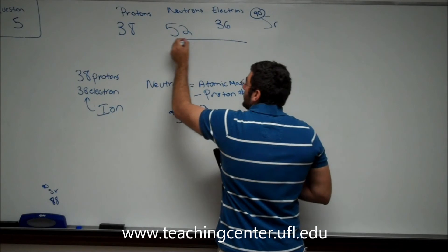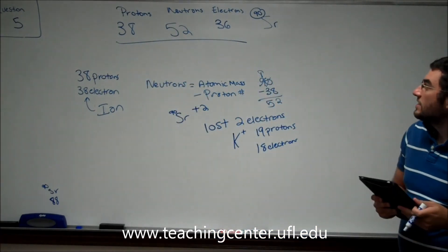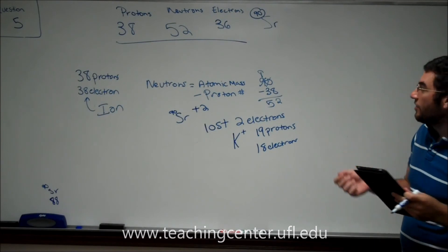The answer for question number five is, strontium-90 has 38 protons, 52 neutrons, and 36 electrons.